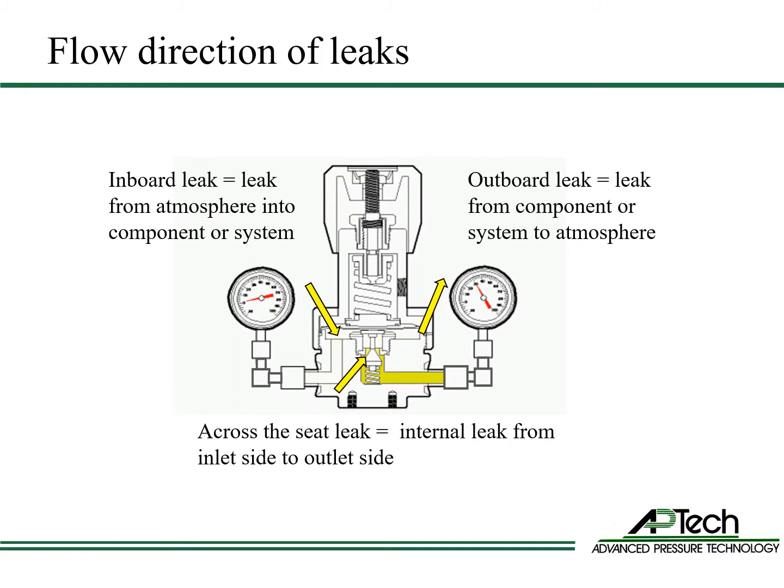There are three leak flow directions that are tested in valves and regulators. An inboard leak is simply a leak from atmosphere into the internal volume. An outboard leak is a leak from the internal volume to atmosphere. A leak across the seat is an internal leak across the seat from the inlet to the outlet side. Inboard, outboard, and across-the-seat leaks are tested to ensure leak-tight operation.